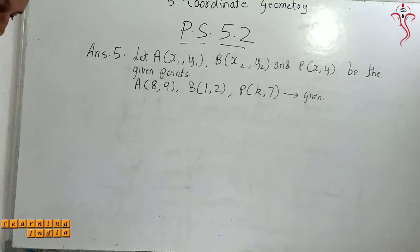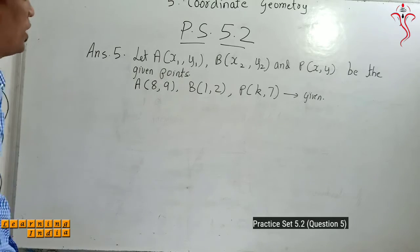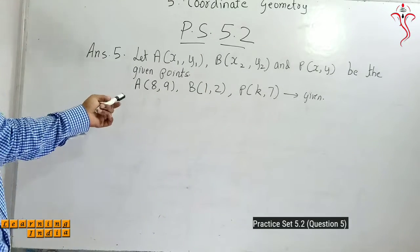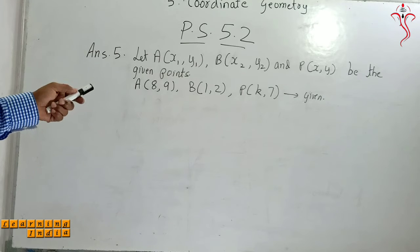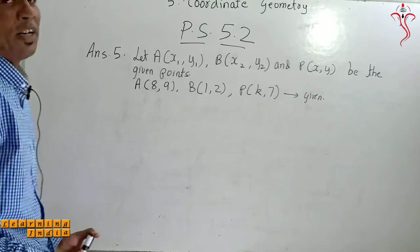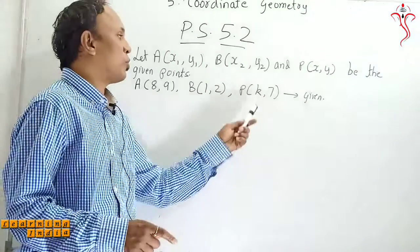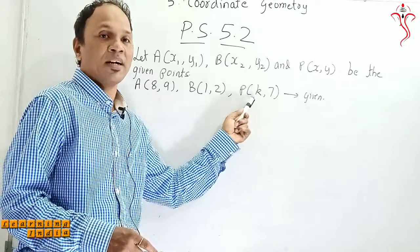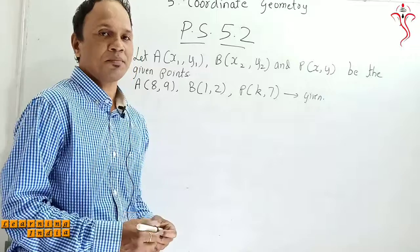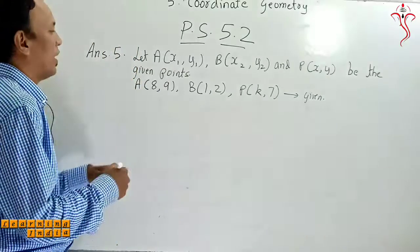In question number 5, they are given you find the ratio in which point P(k, 7) divides the segment A with coordinate 8 and 9, and B coordinate 1 and 2. We have to find the value of k also. Here we will put all the values.